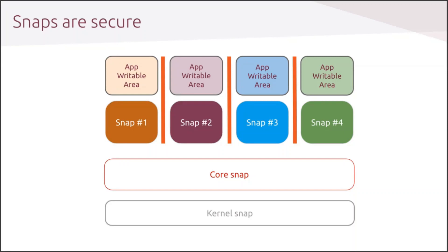What are snaps? Snaps are containerized software packages which are bundled along with their dependencies and that are isolated from other packages through interfaces. They can be both fully contained and immutable or not. From an Ubuntu Core perspective, they are always strictly confined, which means that a snap is not capable of modifying the rest of the snaps or the system. In a nutshell, snaps are born for security.